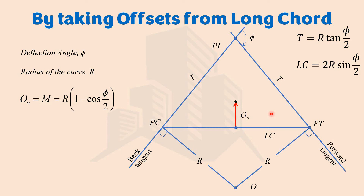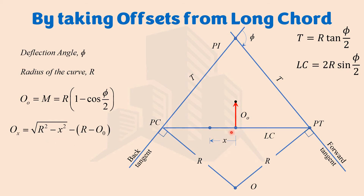We have a formula that helps us mark different points on the curve using horizontal distance x from the mid-point of the long chord. For any point that is x distance away from the mid, the offset Oₓ can be calculated using the formula: Oₓ = √(R² − x²) − (R − O₀), where R is the radius of the curve, x is the distance from the mid of the long chord, and O₀ is the mid ordinate already calculated.